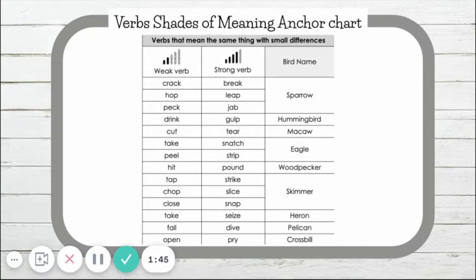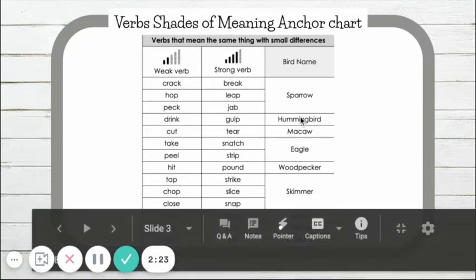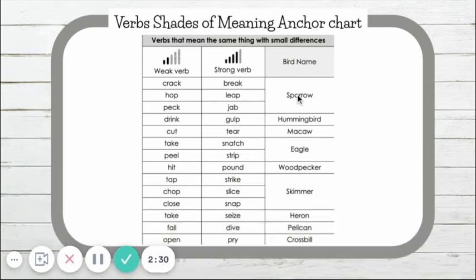These are verbs that mean the same thing with small differences. For example, I know that break means to separate into two or more pieces, and crack means to break without splitting into pieces. They both have similar meanings, but break is a stronger verb than crack. We're going to use this chart to help us play a little game. During our game, I'm going to pick a row and you will act out the verb that you see. Our weak verbs, our strong verbs, and over here we have bird names that tell us what birds do those verbs. For example, a sparrow might jab, leap, or break. A hummingbird might gulp or drink nectar. Let's get started.